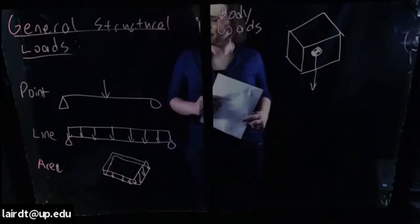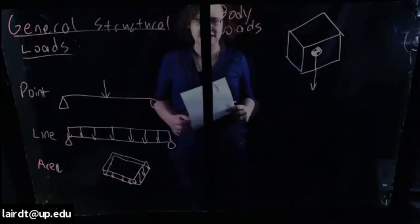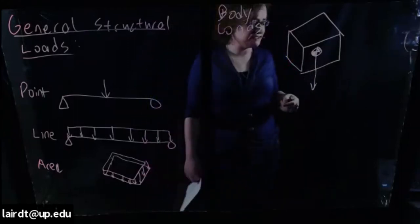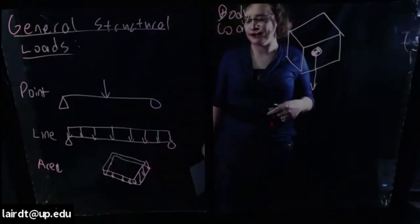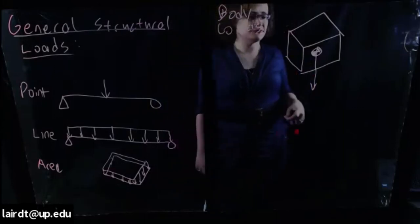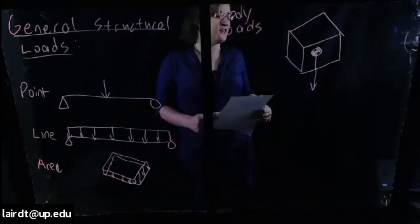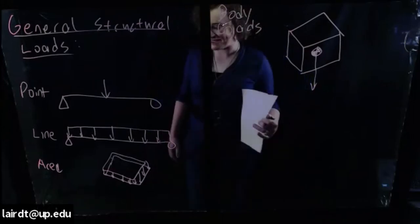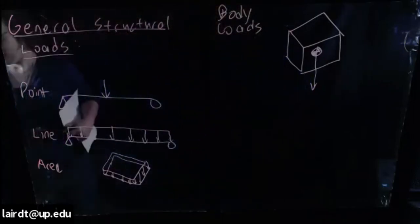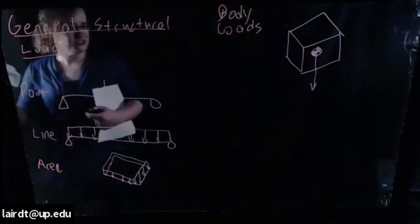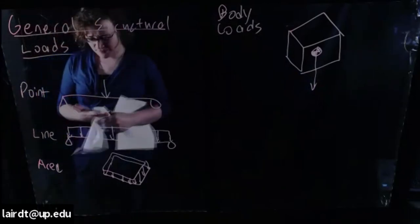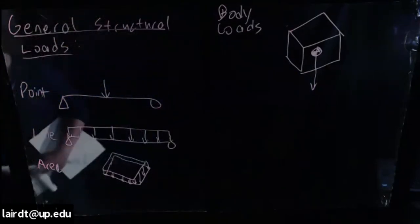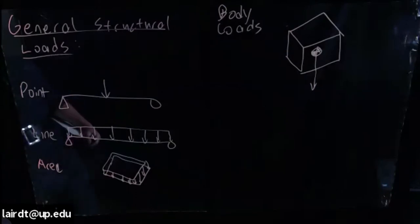So those are our general types of loads: point loads applied at a single point on a beam, floor slab, or wall; line loads distributed along a beam or column; area loads applied over a horizontal or vertical surface representing dead load, live load, wind load, etc. Body loads are generally not encountered much in most structural engineering contexts.